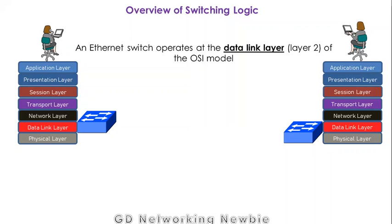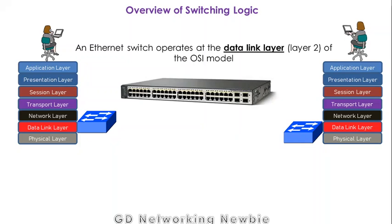Overview of switching logic. We will be discussing how a switch works. A switch is a network device — you might have seen one in your computer labs. A switch operates at the data link layer of the OSI model. There are seven layers in the OSI model, and the data link layer is where the switch operates.